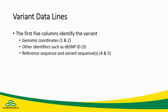The first five columns identify the variant. Columns one and two show the genomic coordinates — the chromosome and position. Column three shows identifiers associated with that variant, specifically things like dbSNP or other common database identifiers. Columns four and five will show the reference sequence and any alternate sequence or alternate sequences that replace it to describe the variants.